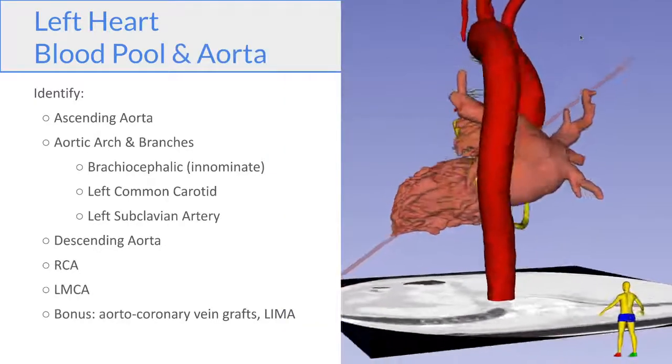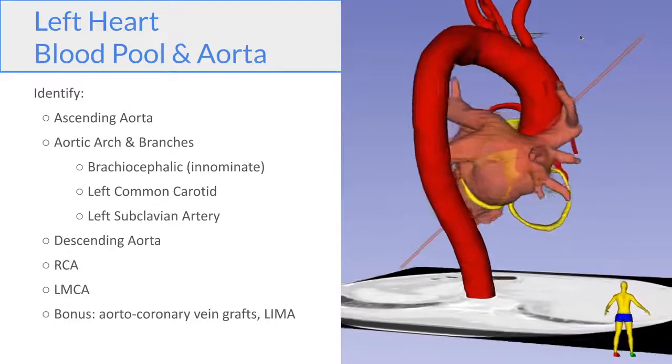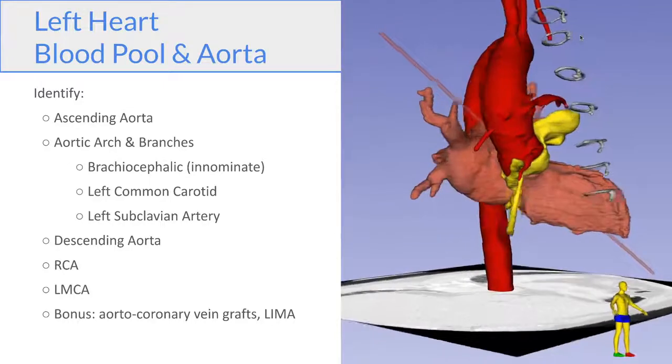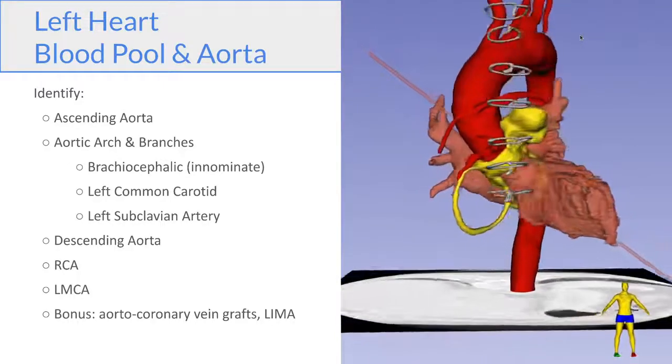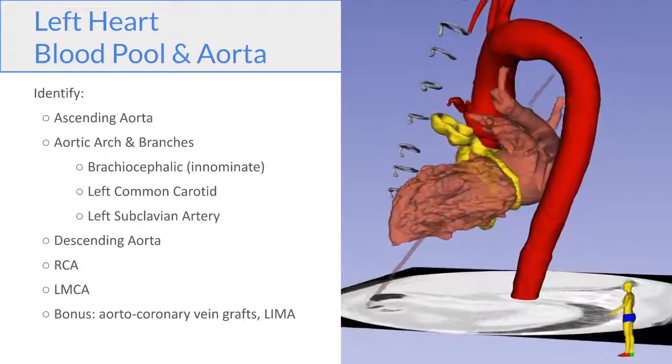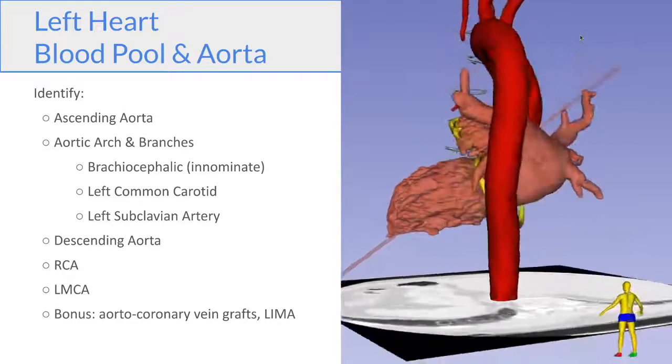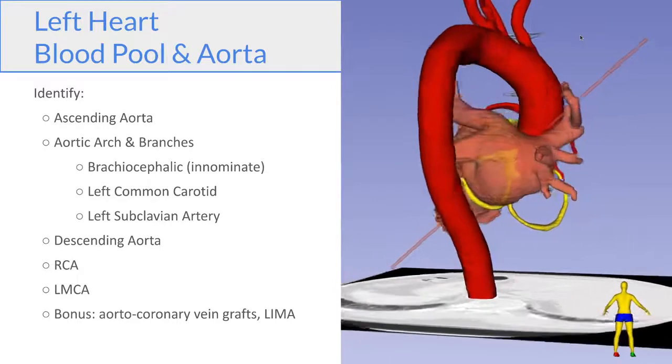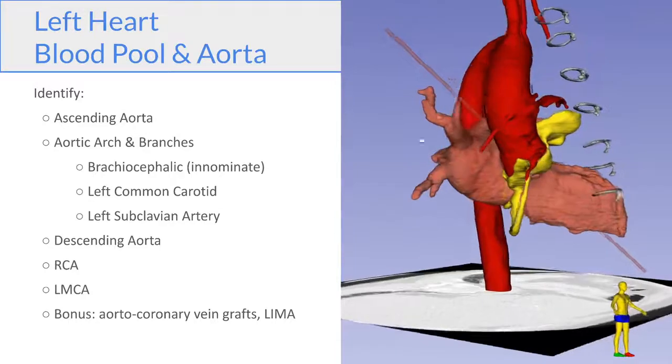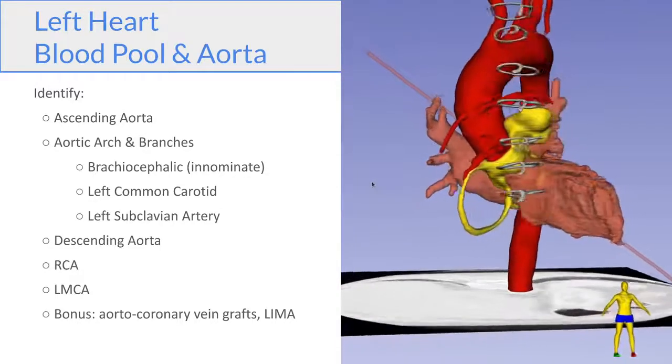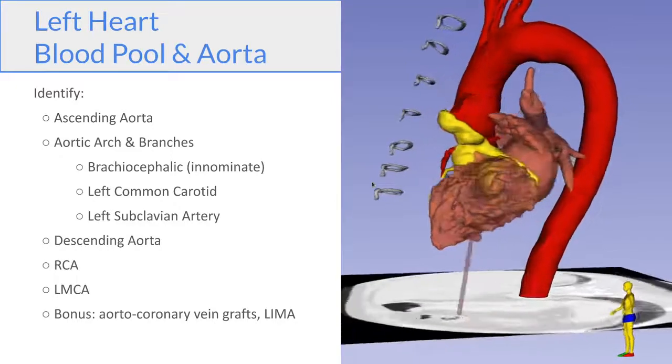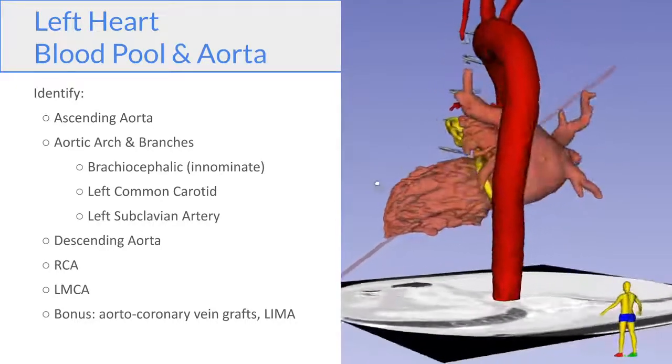Now we add the aorta. You can see the ascending aorta, the aortic arch and its branches, the brachiocephalic, the left common carotid, and the left subclavian. You can see the descending aorta. And if you look closely at where the aorta takes off from the heart base, you can see the start of the RCA, and the left main coronary artery as the model rotates around. So here you can see the RCA, as well as the vein grafts in the ascending aorta. And here you can see the left main.